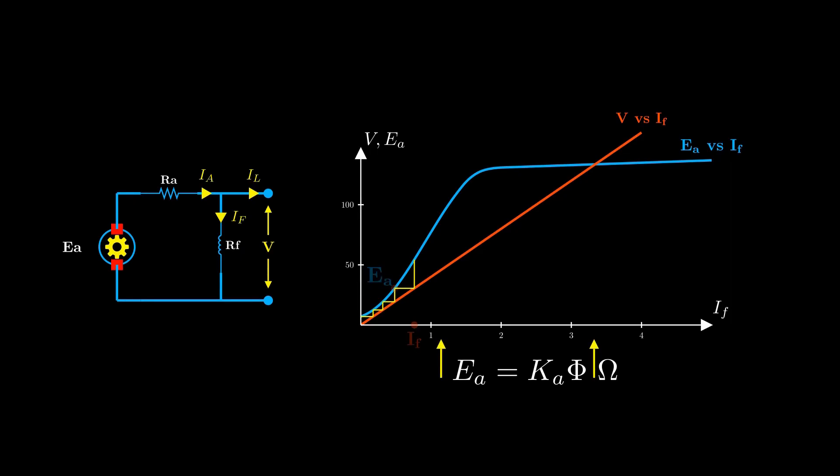At this point, increasing the field current no longer significantly increases the flux. The generator settles at a stable terminal voltage, determined by the intersection of the magnetization curve and the field resistance line.